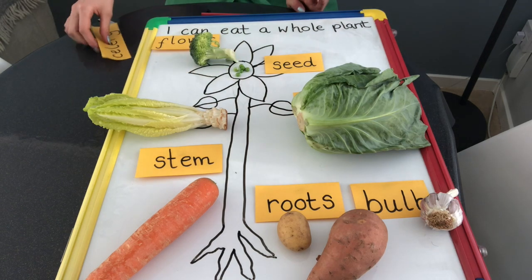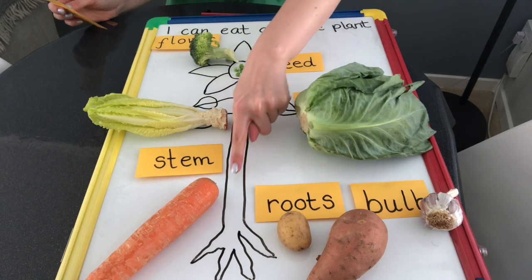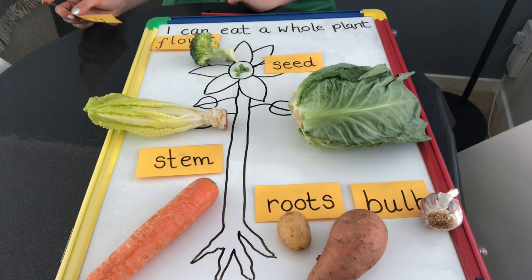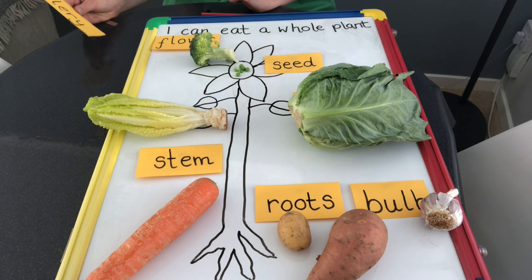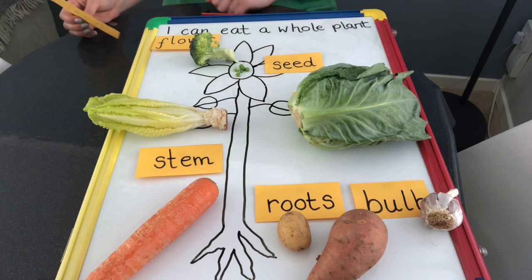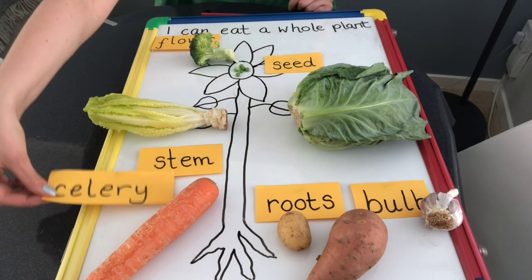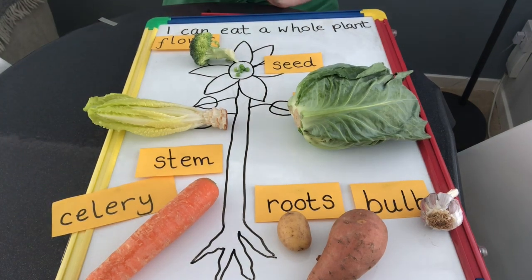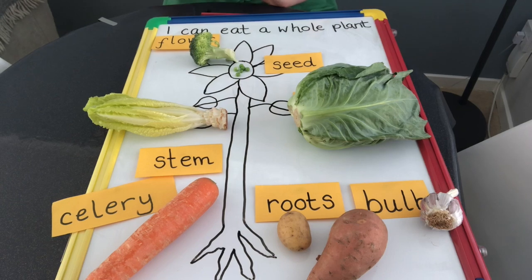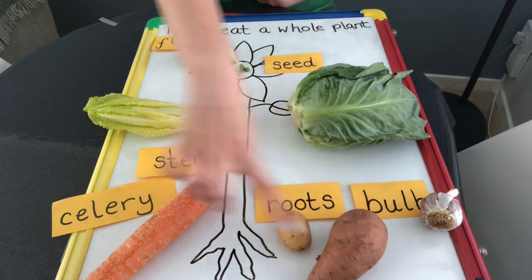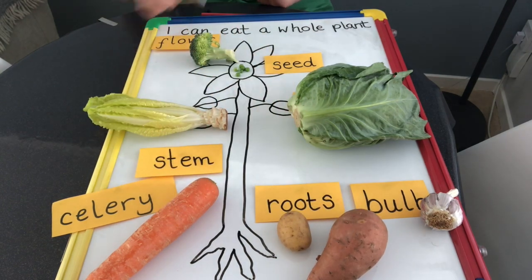Now I'm sure you've noticed that I've missed out the stem. I couldn't find anything in my fridge that was a stem. I had a good think and I know that rhubarb is the stem of a plant, and so is celery and so are asparagus. I've written celery here because I don't have any celery in my house. But these are all the different ways we can eat every single part of a plant, from the roots all the way up to the flower at the top.